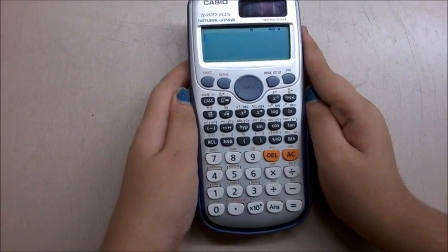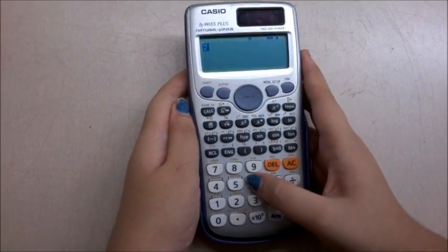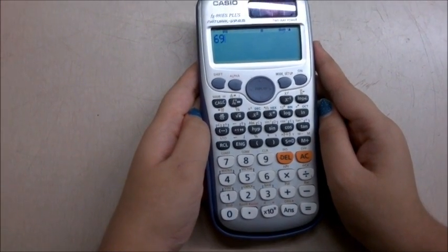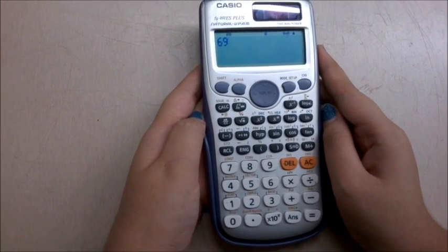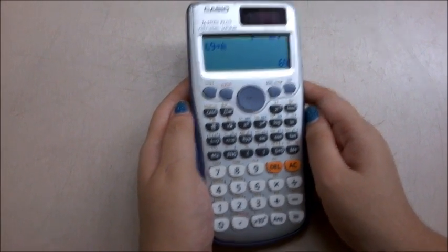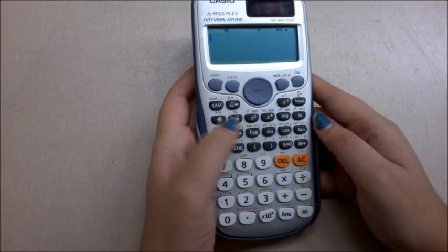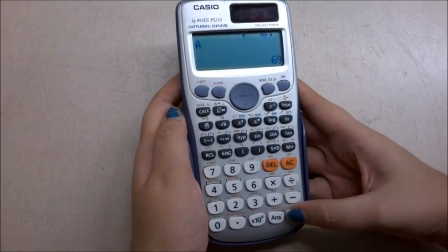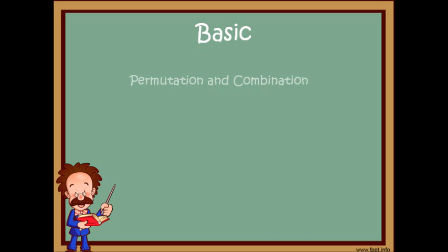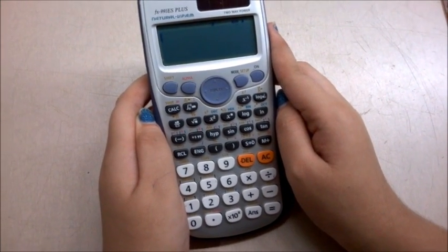In order to store a number, which is required many times in calculations, we use the store function. Here we are storing the number 69. Press shift, store, and assign an alphabet which will act as a variable — from A to F as shown on the console. Here we are using alphabet A, so the number is stored as A. To use this number in calculations, press recall and the alphabet A, so the number appears wherever it is required. Similarly, you can also store answers as an alphabet whenever required.